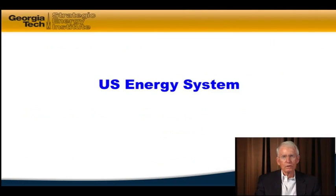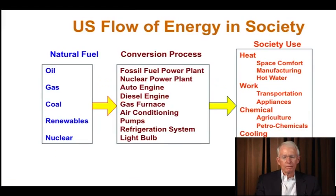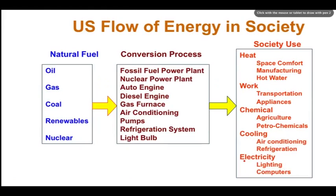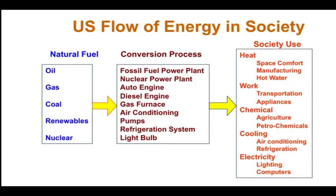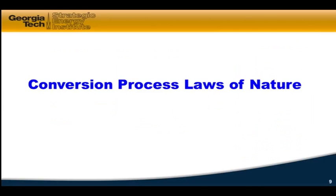Just flashing through the energy system details we've covered: I divided them into three categories. Number one, society's use — what we use energy for. Number two, where we get it from — we have to get it from a natural source. And third, the conversion process to convert it from the natural form we find it to the form that makes our lives better. We've covered all three of these boxes. That is the sum and substance of the three parts of our energy system in the US, as well as most countries.